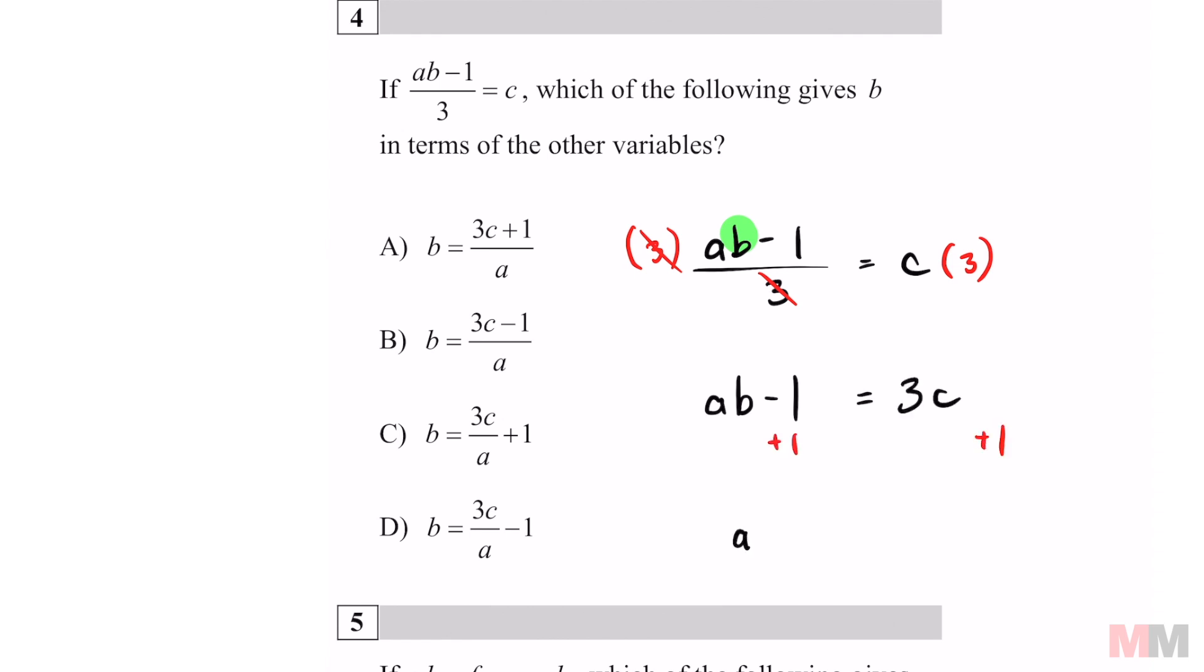You're left with AB equals three C plus one. And then the last move is to divide by A. You can also divide by A like this because that's the version that shows up on the answer choices. So that would be letter A.